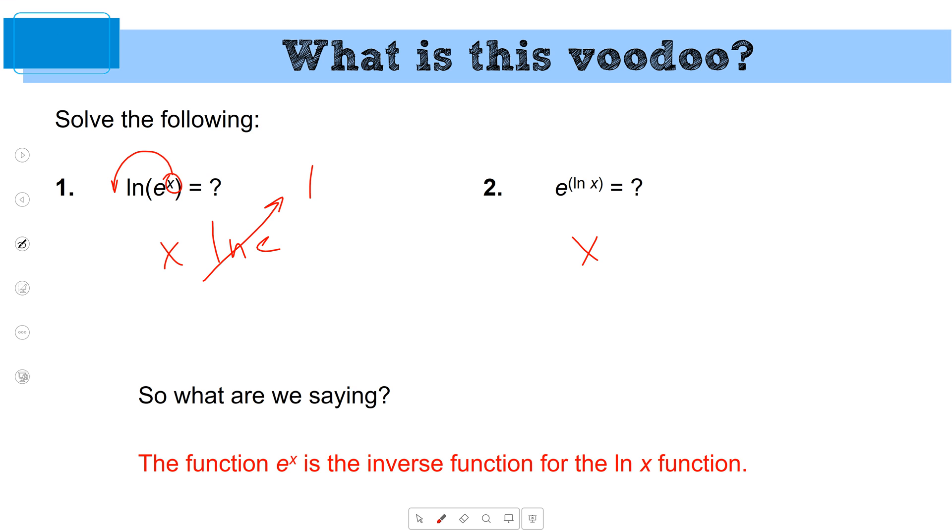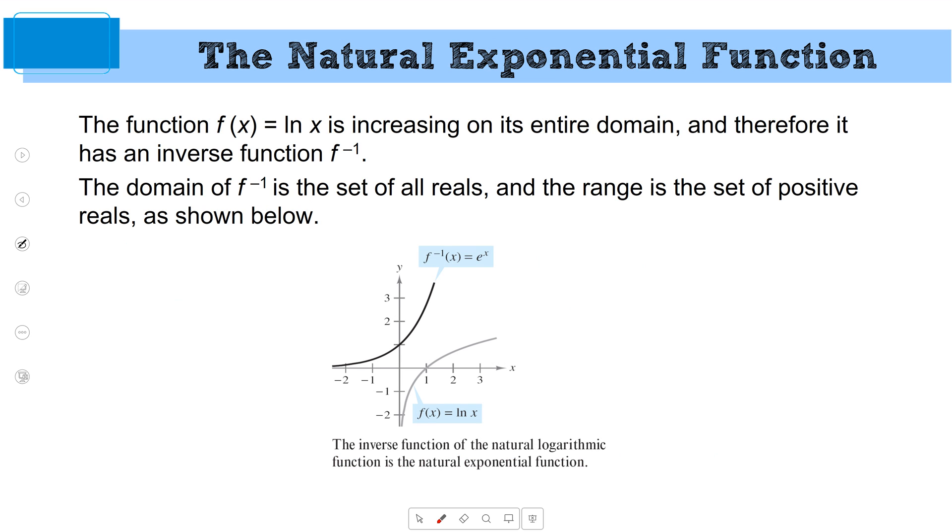Notice, in the first equation, I put e to the x into the function natural log of x. In the second function, I put the natural log of x into the function e to the x. Both equations gave us x. So that means they must be inverses of each other. Now we go down that path that we went down the other day with all the inverse stuff. They're reflections of each other over the line y equals x.